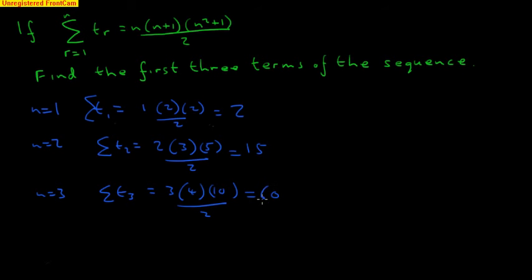So they're the sum to the first three terms. So the first term must be 2. The sum to the two terms is 15. So 2 plus something must be 15, and that something, of course, must be 13.